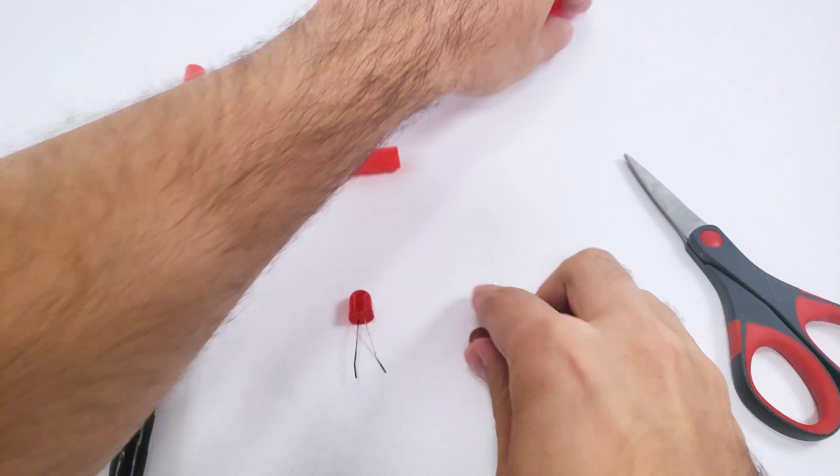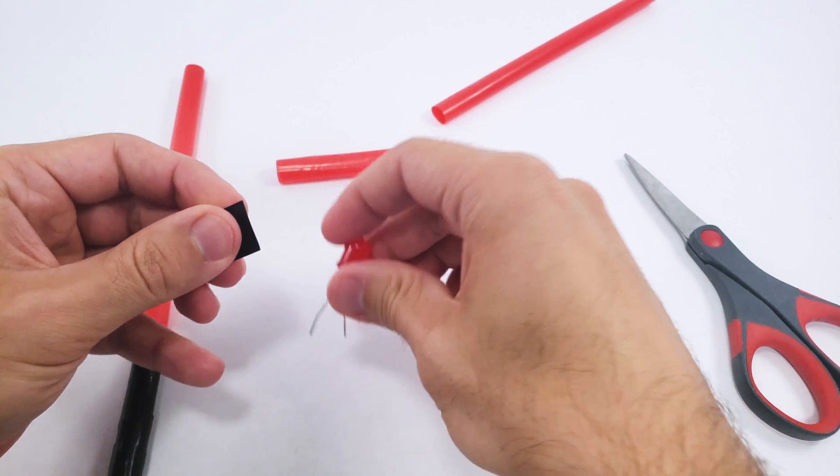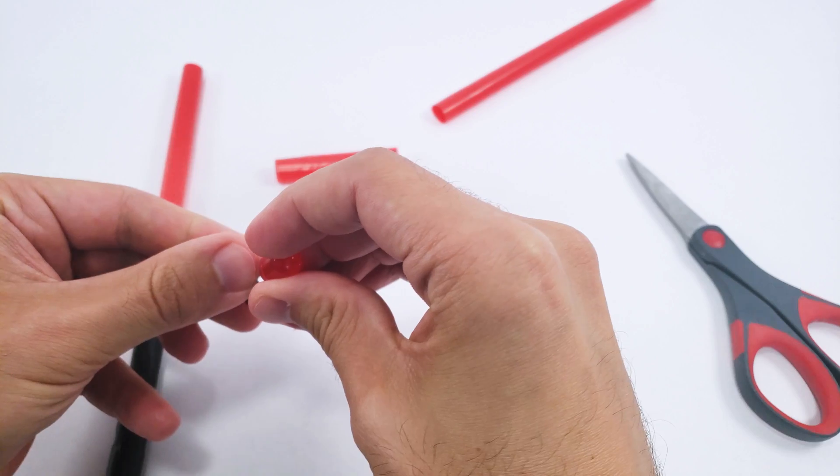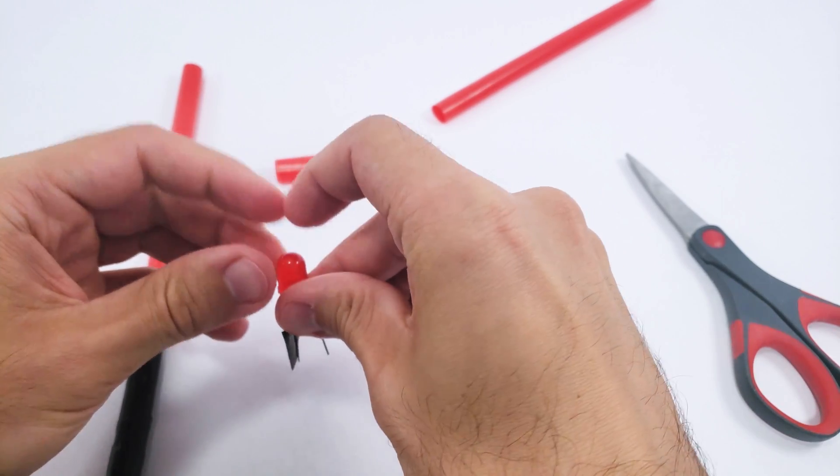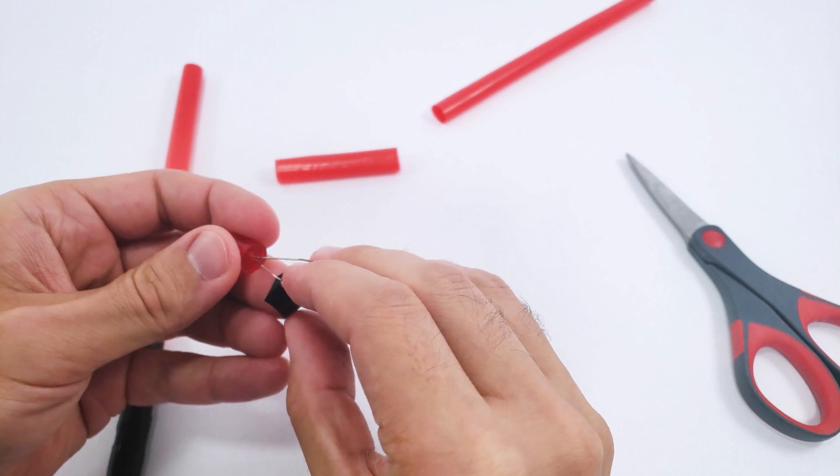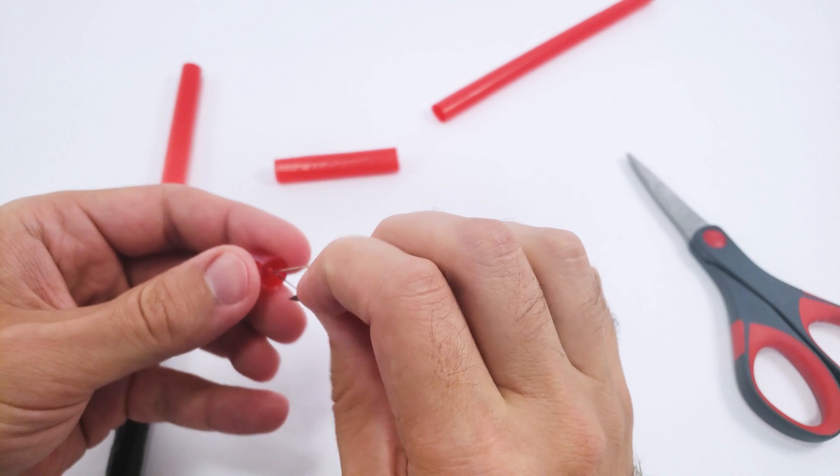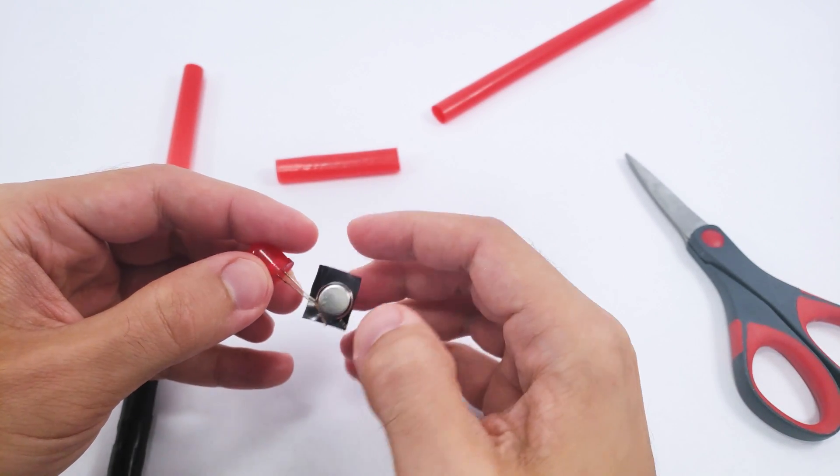And then you're going to take your LED and use a small piece of electrical tape to tape one side to the battery, but leave the other side untaped because you don't want constant contact. You only want contact when you squeeze them together. So I'm going to use one piece of tape to secure the positive side of the battery to the long leg of the LED.